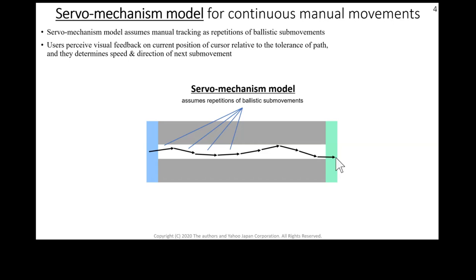So in a steering motion, users perceive the cursor position and determine the speed and direction of the next sub-movement. And each sub-movement is performed in a ballistic manner.